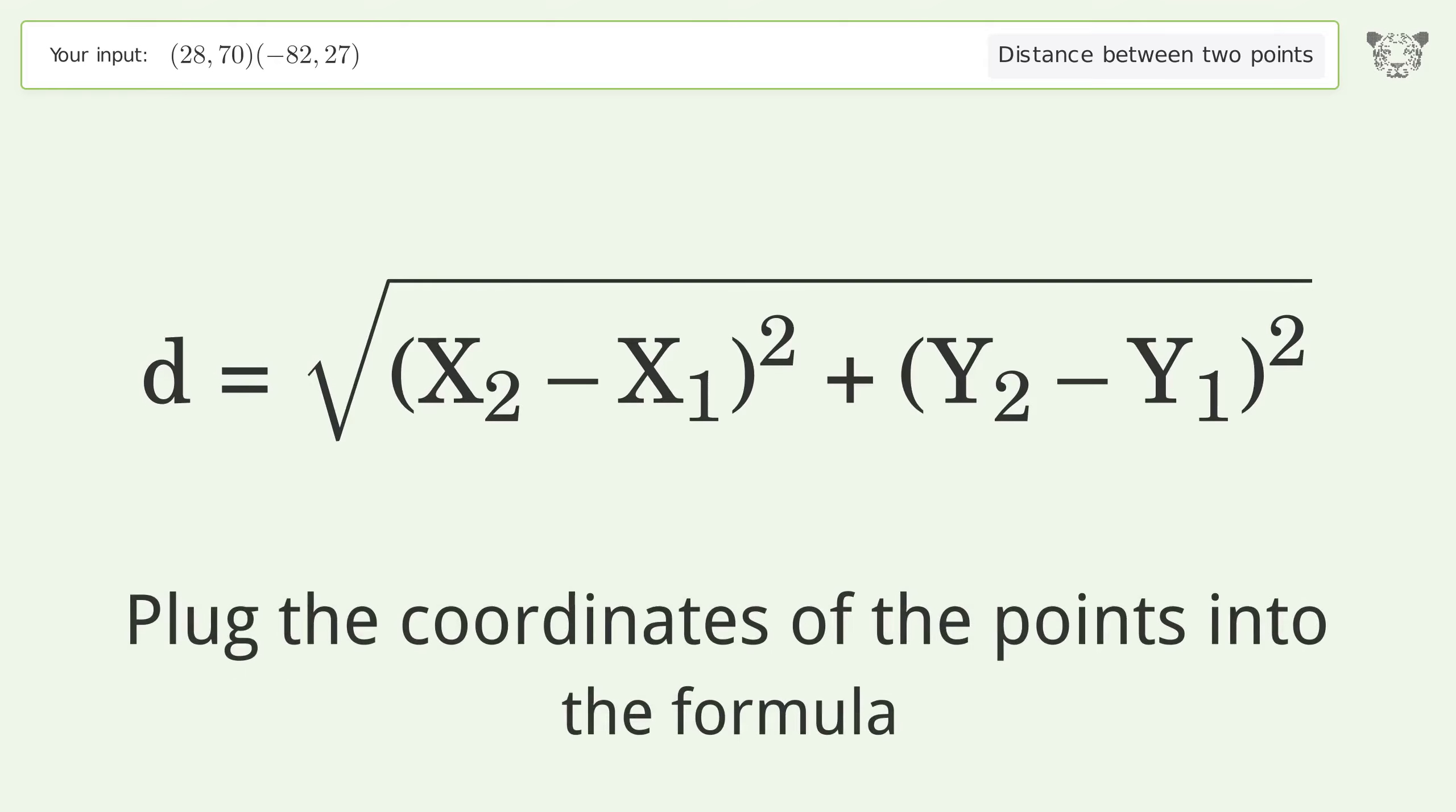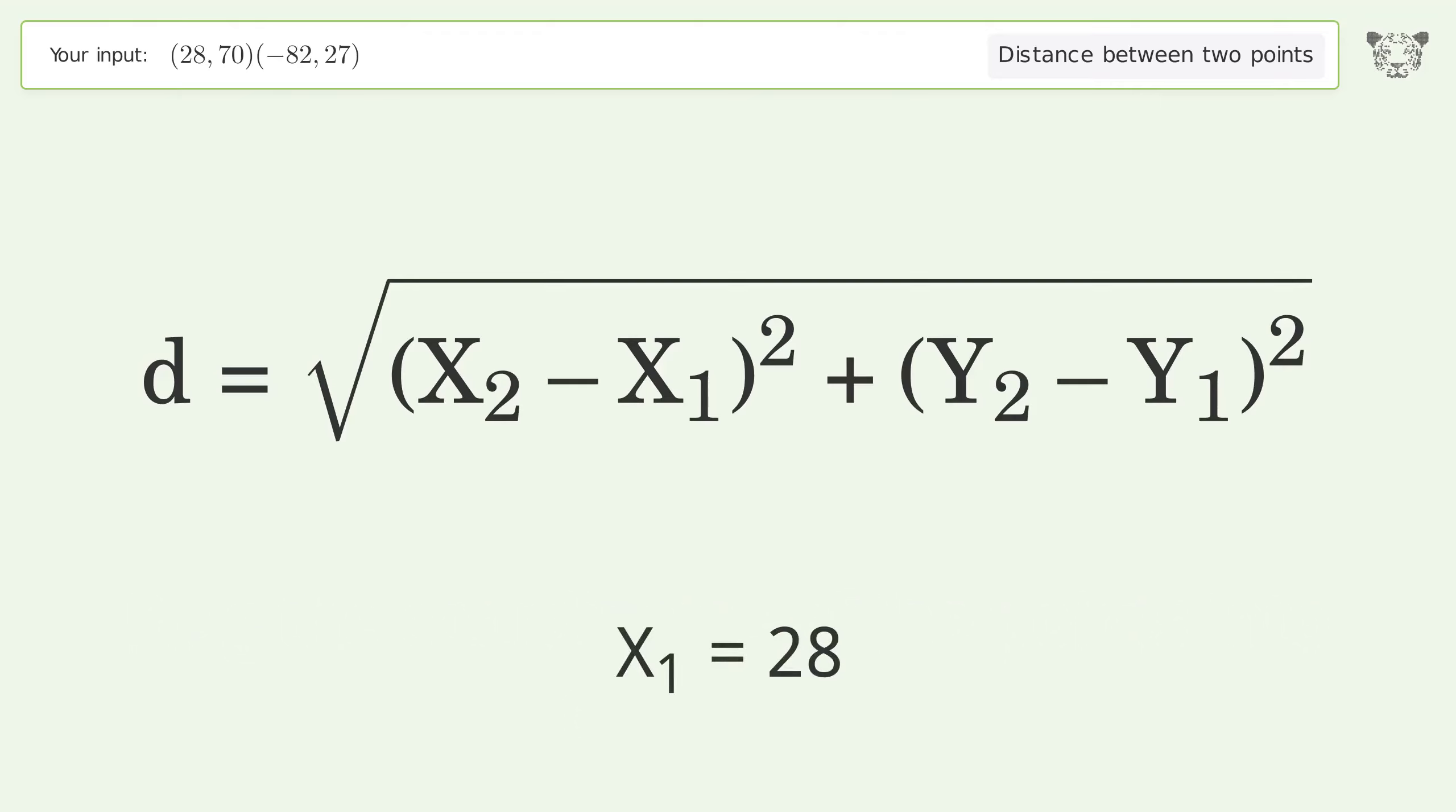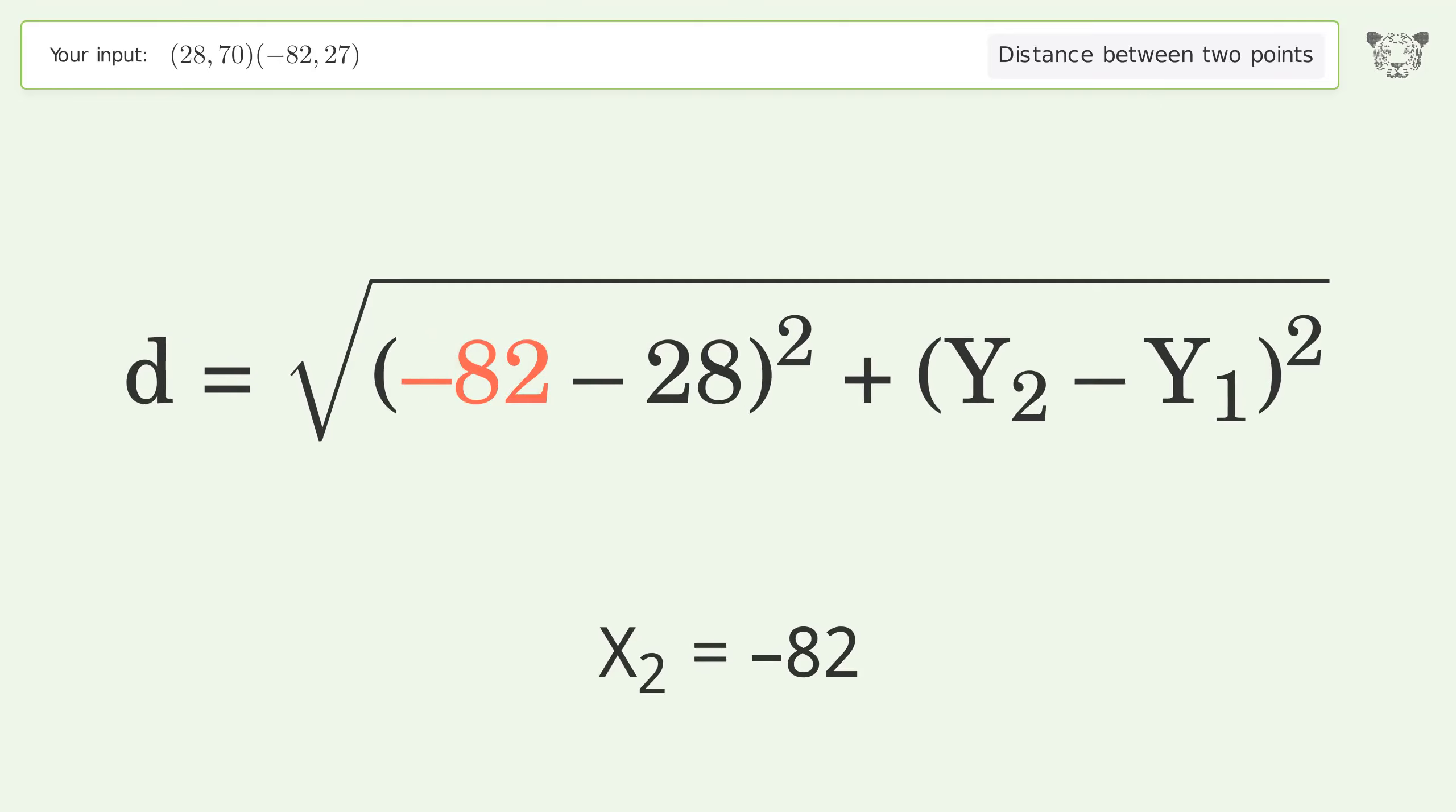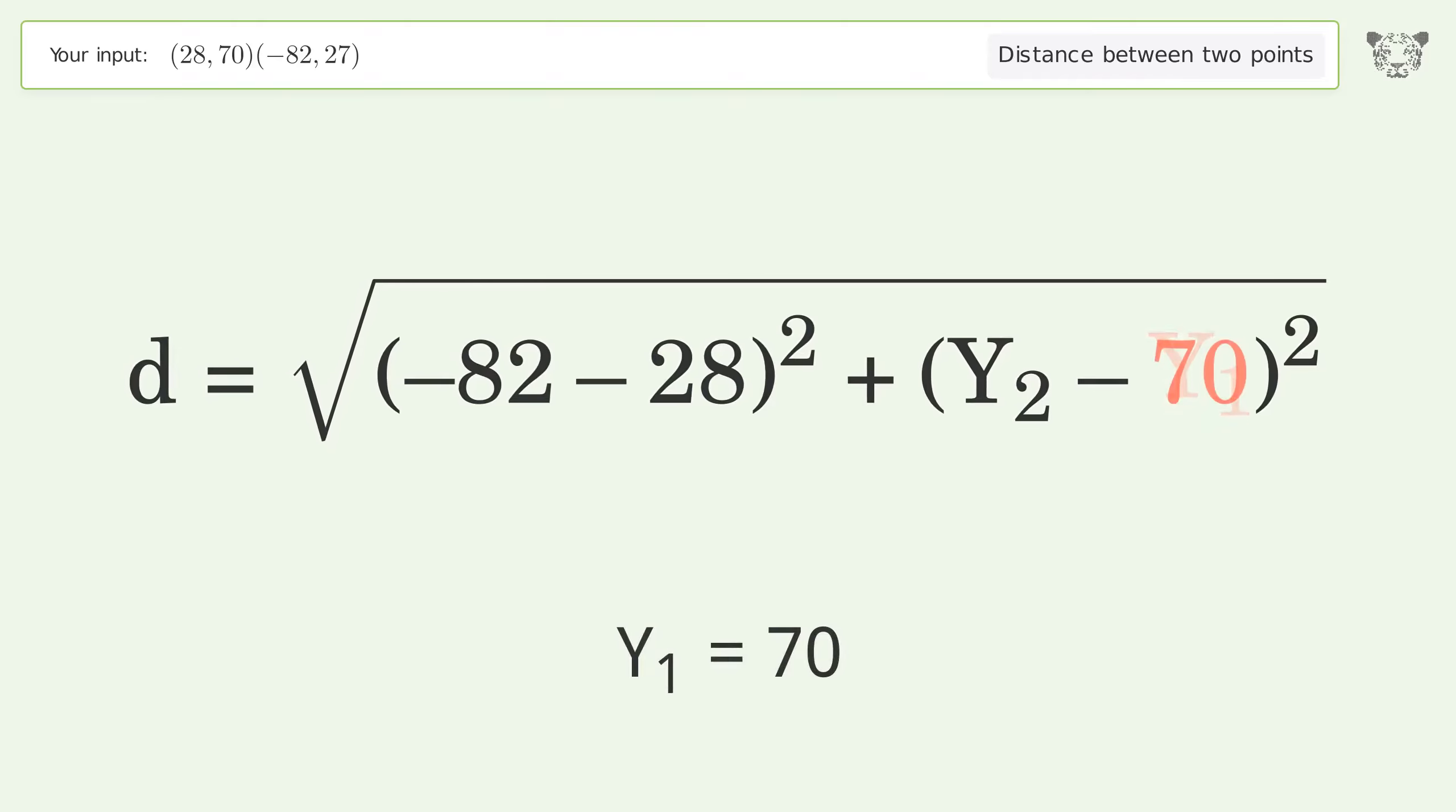Plug the coordinates of the points into the formula. x1 equals 28, x2 equals negative 82, y1 equals 70, y2 equals 27.